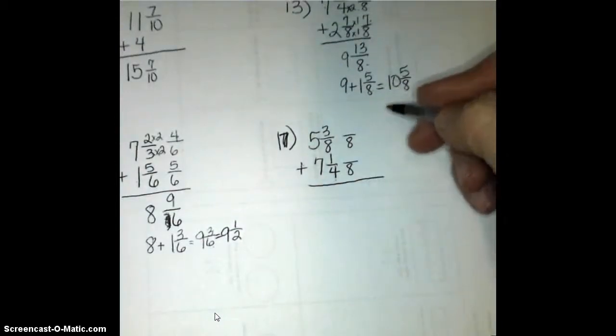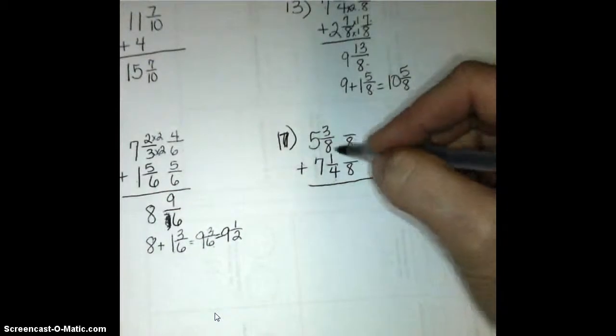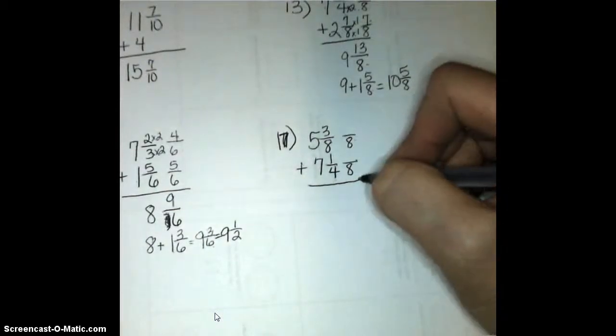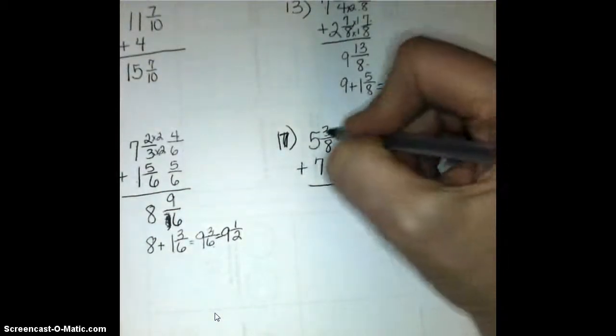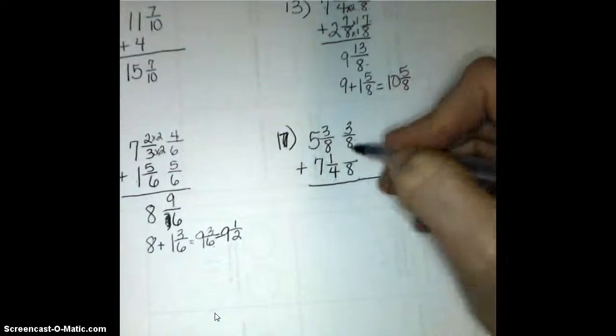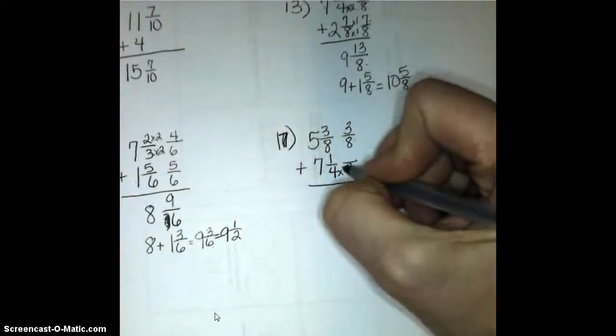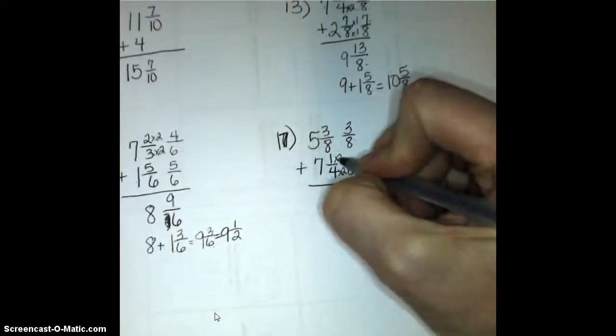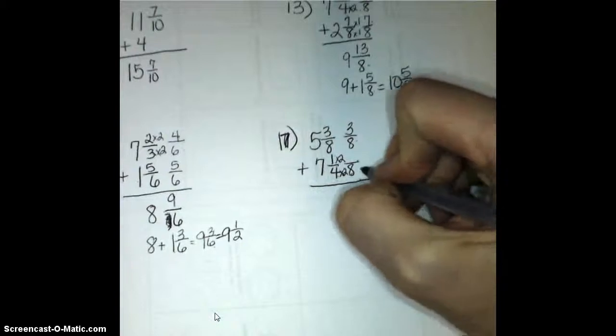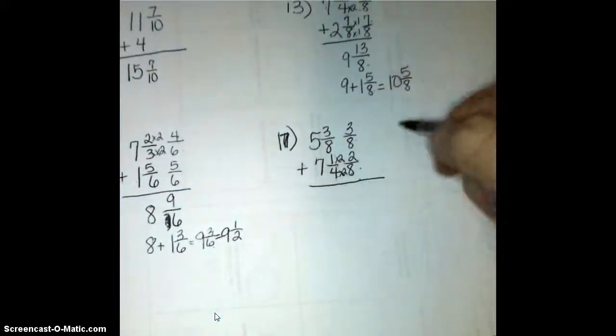We could also have as big as 80 if we wanted, but our smallest one that is common is 8. So 3 eighths would stay 3 eighths, but 1 fourth, it is the second equivalent fraction to 1 fourth, because 4 times 2 is my 8, so 1 times 2 is 2.